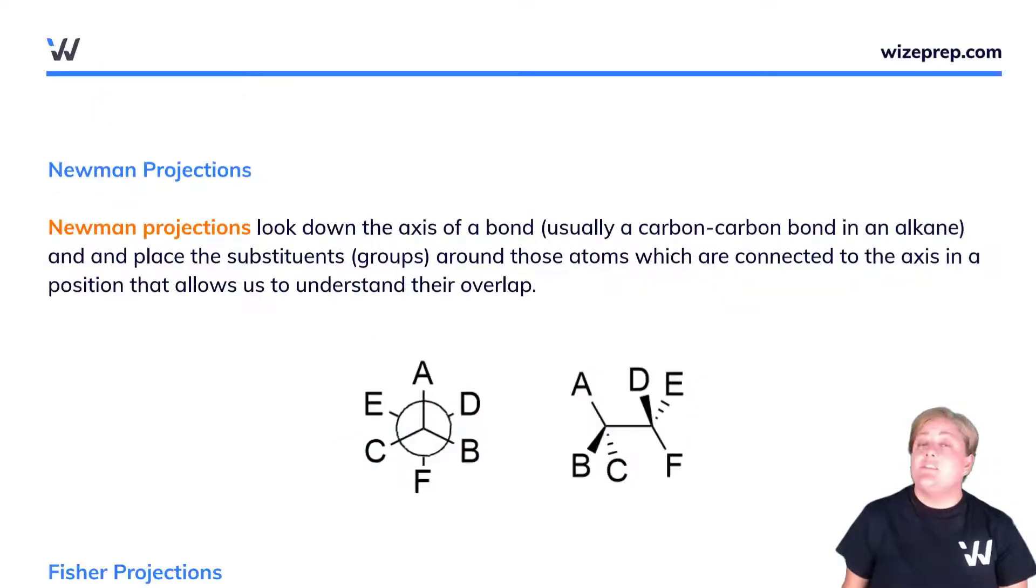Newman projections look down the axis of a bond. I always like to think of myself physically placing myself staring down two atoms of a bond—typically a carbon-carbon bond in an alkane. We place the substituents or groups bound to those carbons around those atoms connected to the axis in a position that allows us to understand their overlap.